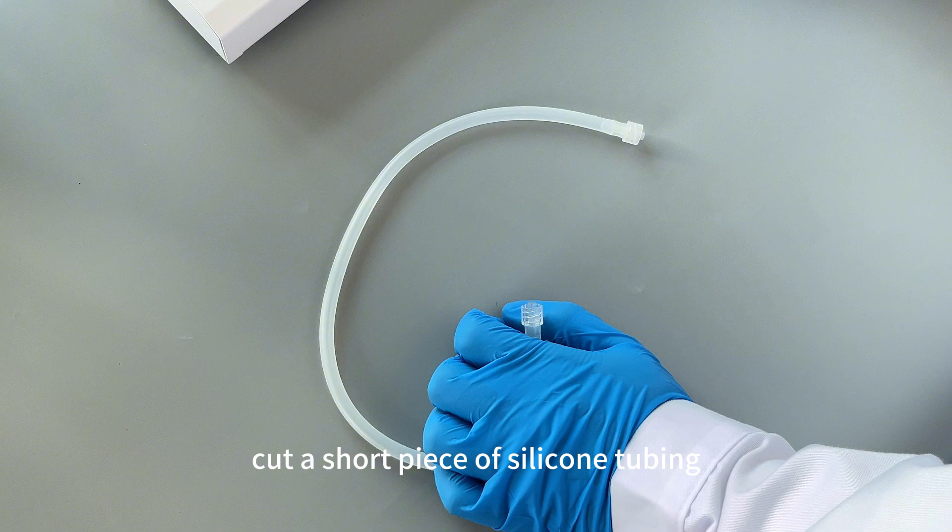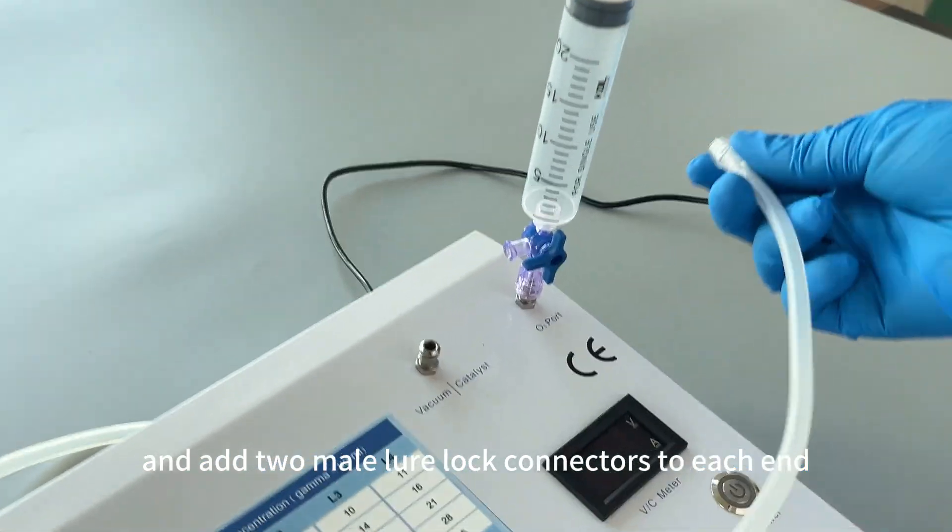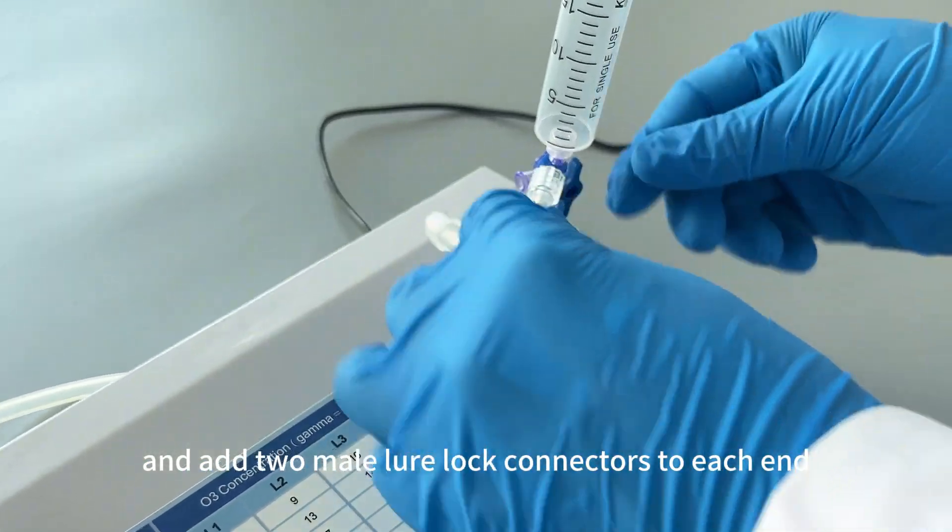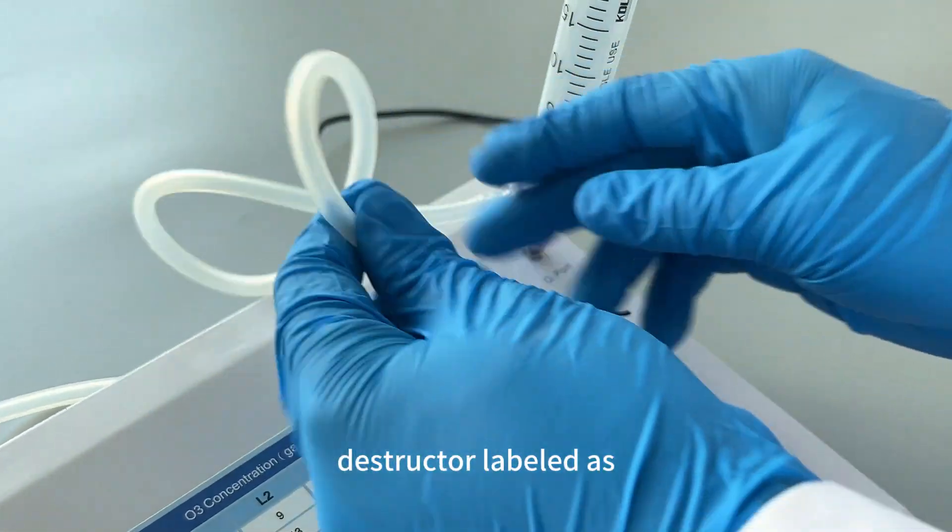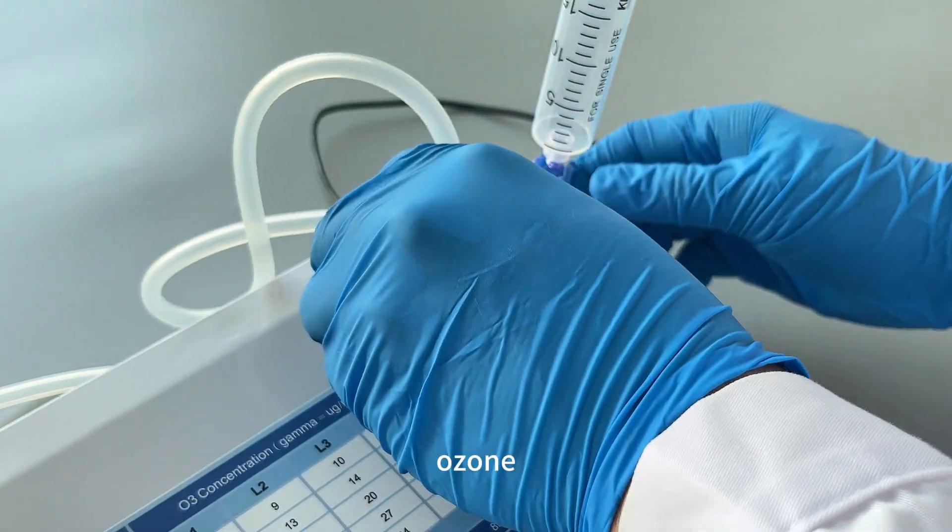Cut a short piece of silicone tubing and add two male lure lock connectors to each end. Then, connect the side outlet of the three-way connector to the ozone destructor labeled as Ozone Destructor.